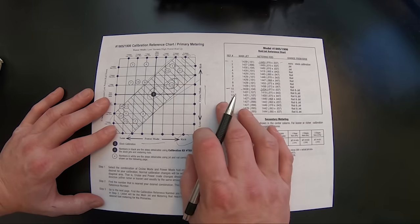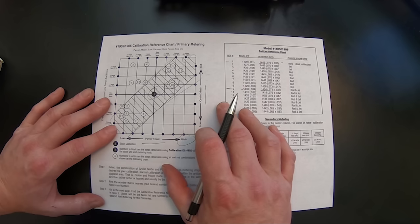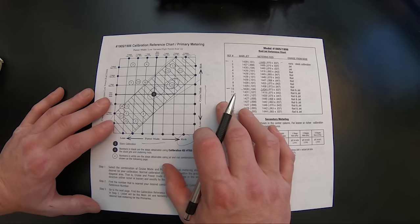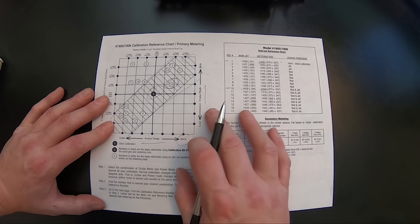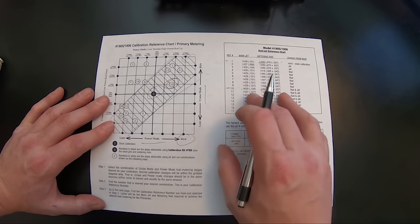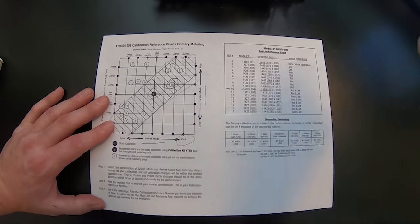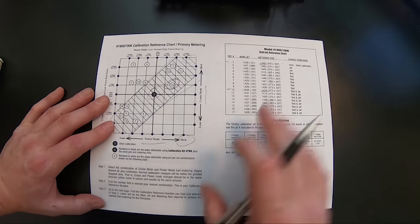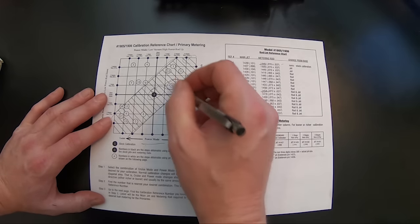Those two part numbers, you can go to a local auto parts store, typically a good one that has a lot of Edelbrock parts on the shelf. They'll carry both those jet part numbers and rod part numbers. Buy one of each, bring it home, and you can make that adjustment on the carburetor. Small steps.